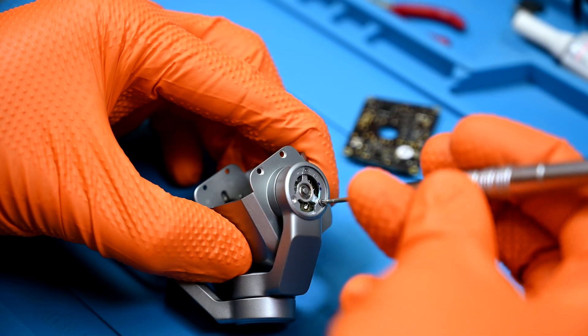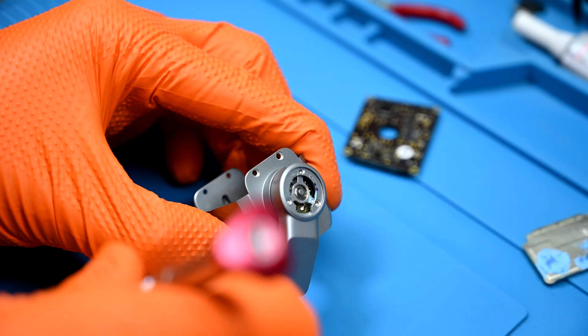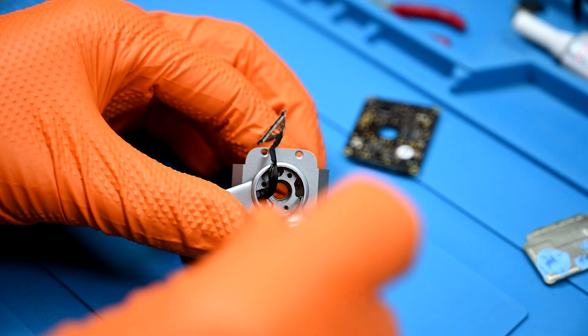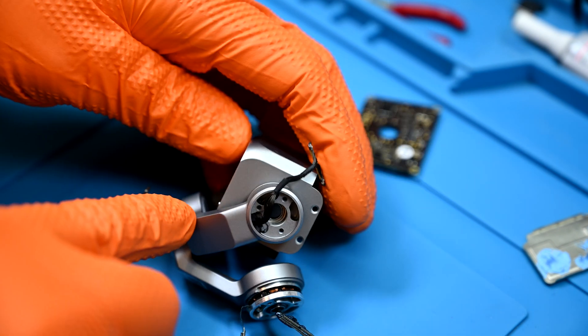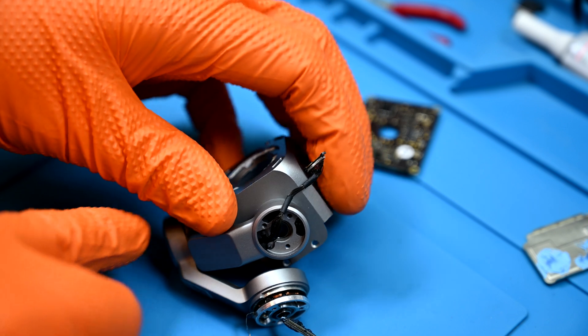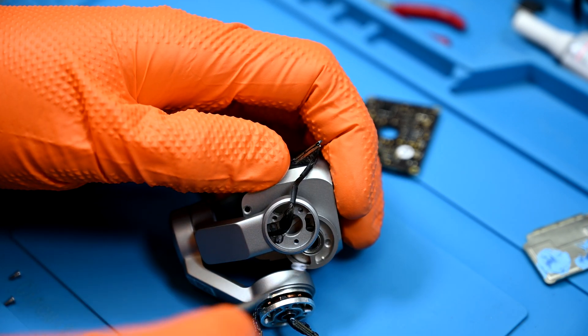On the opposite side there are three more screws that hold the pitch motor in place. Back to the puzzle piece side there are three more screws that can be accessed through the hole in the arm by rotating the camera housing accordingly. How's that screw map looking?